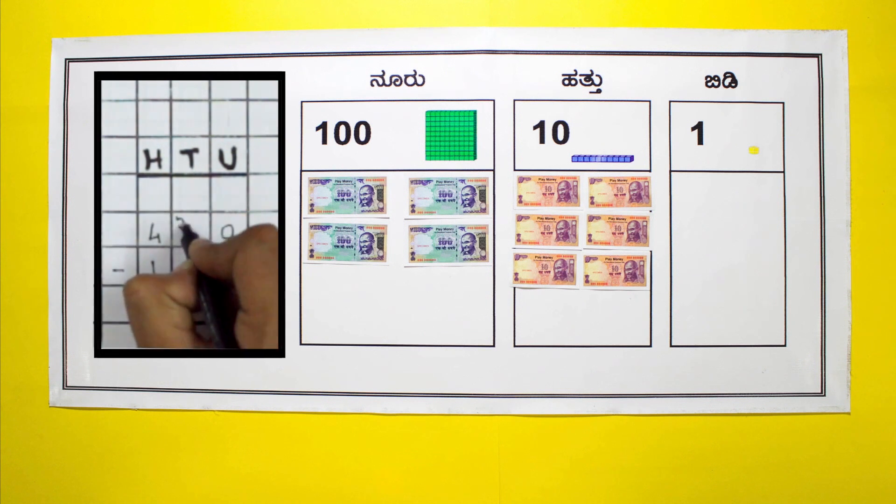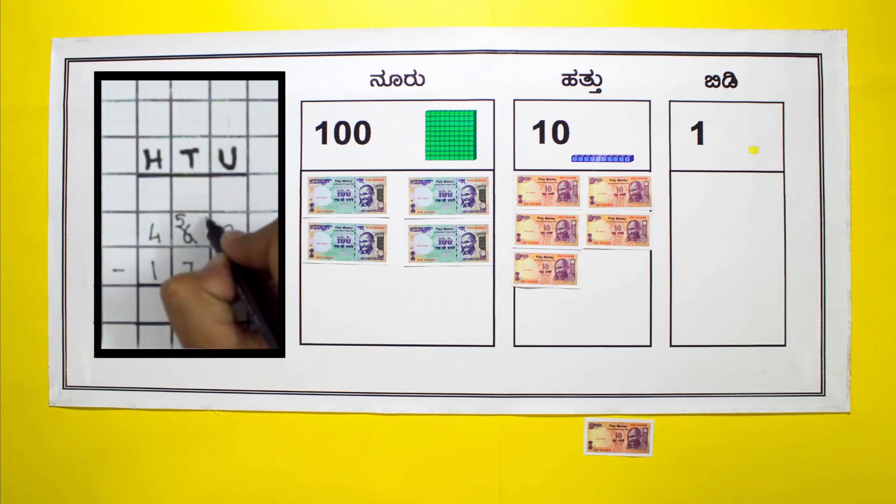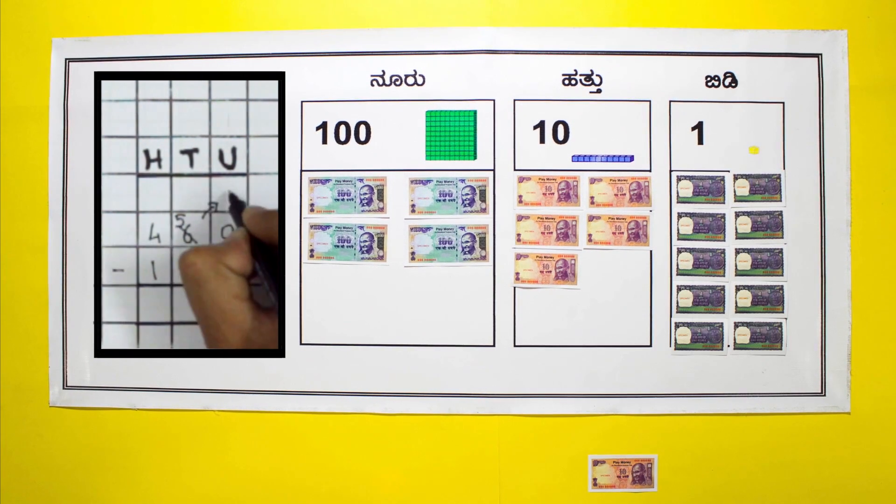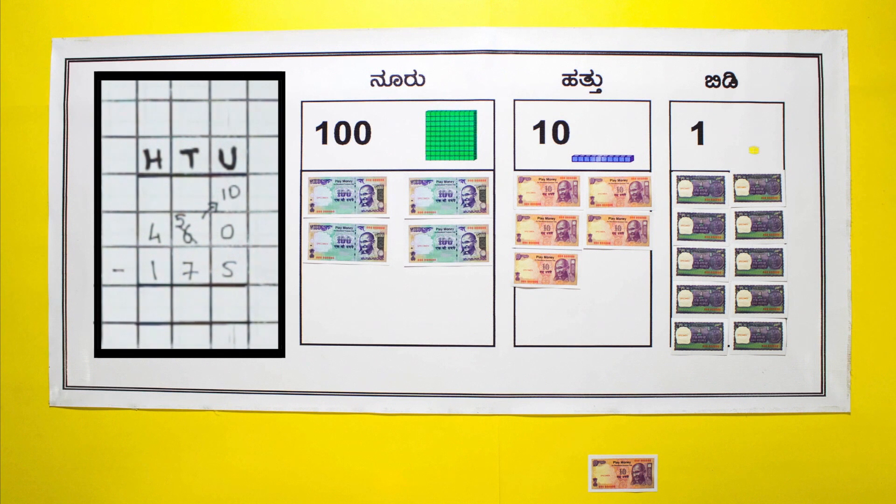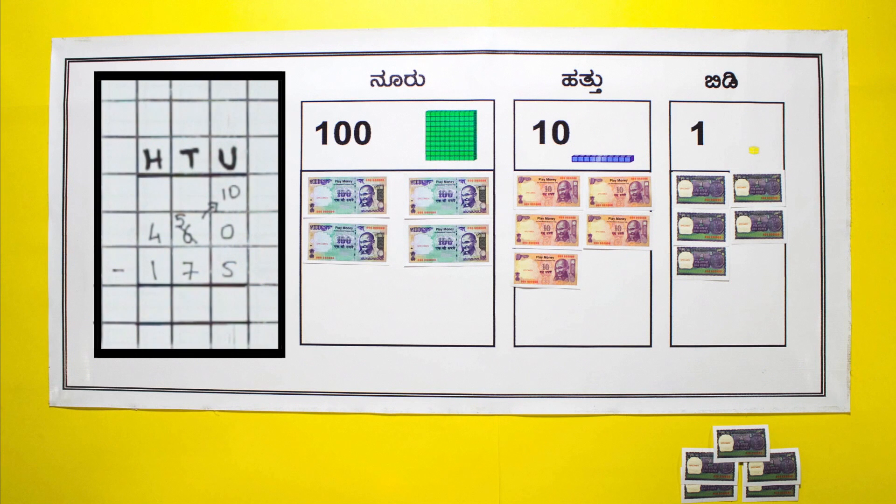Since there are no 1 rupee notes, she must borrow a 10 rupee note and regroup as 10 one rupee notes. Now she can subtract 5 from 10. This leaves 5 one rupee notes on the place value mat.